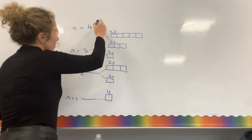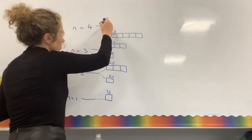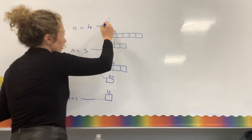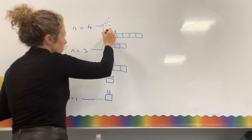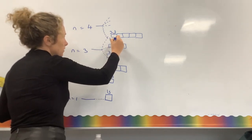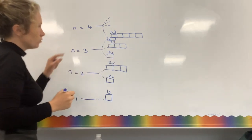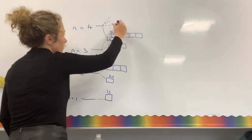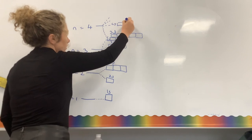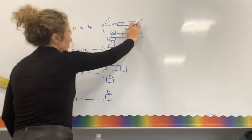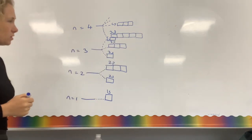Our fourth energy level is made of four sublevels, but we're really only concerned with the first two. There's a slight complication because your 4s orbital falls below your 3d — so there's a slight overlap there — and then your 4p orbitals follow. You don't need to worry about the rest.